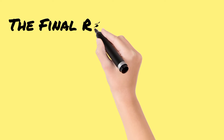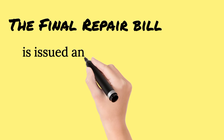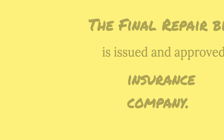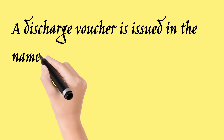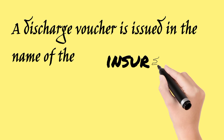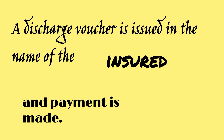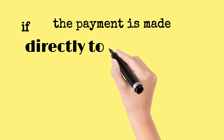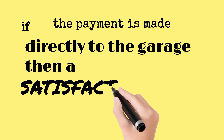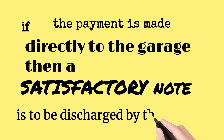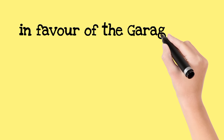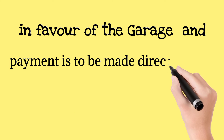The final repair bill is issued and approved by the insurance company. A discharge voucher is issued in the name of the insured. If the payment is made directly to the garage, then a satisfactory note is to be signed by the insured in favour of the garage and payment is made directly to the garage.